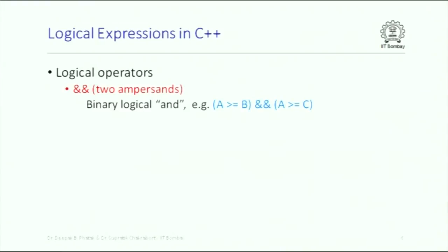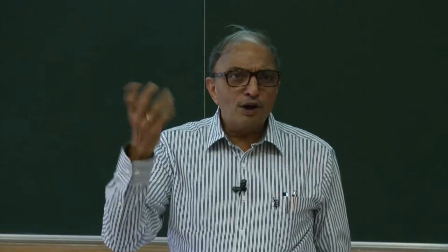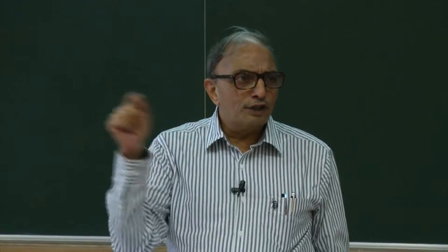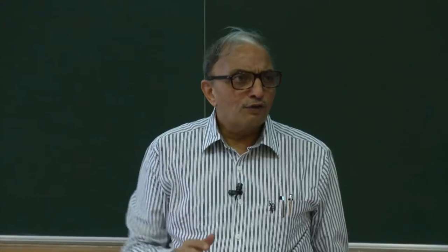Two ampersands (&&) represent logical AND. So A >= B && A >= C means only if this entire expression will be true when both sub-expressions are true. If only one of the sub-expressions is true and the other is false, the total value will be false. True AND true is true; true AND false is false; false AND false is false.